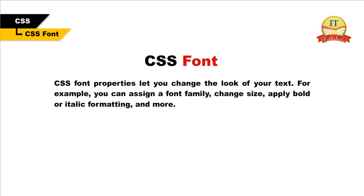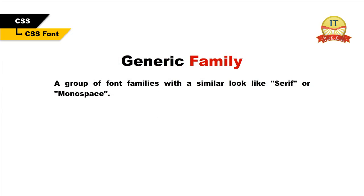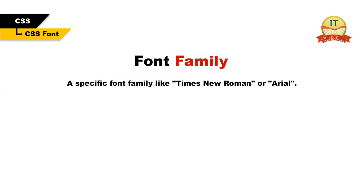CSS font. CSS font properties let you change the look of your text. For example, you can assign a font family, change size, apply bold or italic formatting, and more. CSS font family — the font-family property allows you to set the font family. In CSS, there are two types of font family names: generic family, which is a group of font families with a similar look like serif or monospace, and font family, which is a specific font family like Times New Roman or Arial.